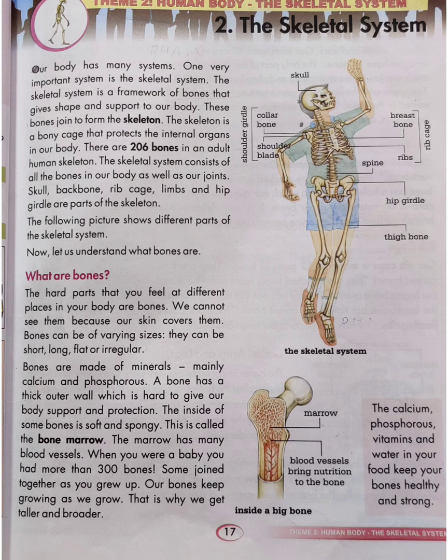The main points on this page are: there are 206 bones in an adult human skeleton. A child has more than 300 bones that join together to form 206 bones as an adult. A soft and spongy material inside big bones is known as bone marrow.